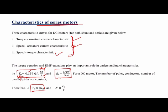In the back EMF equation, P, Z, and A are constant, so we can write N is directly proportional to back EMF and inversely proportional to flux. Using these two relations we can draw all three characteristics of the DC series motor.